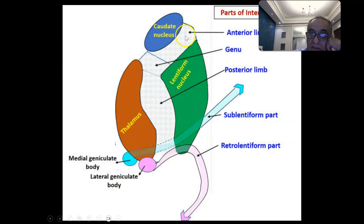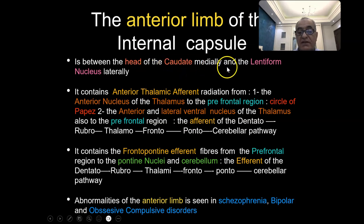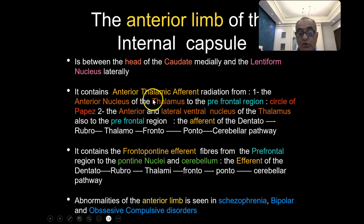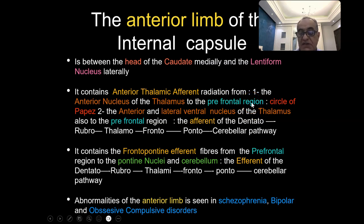So again: anterior limb, genu, posterior limb, sublenticular part, retrolenticular part. The anterior limb of the internal capsule lies between the head of the caudate medially and the lentiform nucleus laterally. The anterior limb contains what we call the anterior thalamic afferents, which form part of the circle of Papez — going from the anterior nucleus of the thalamus to the prefrontal region.